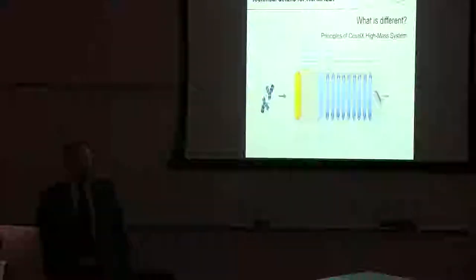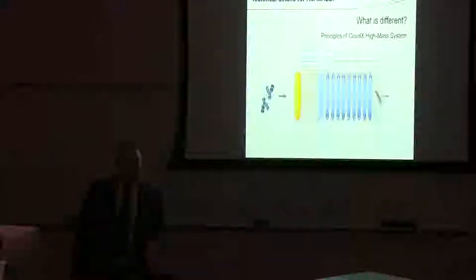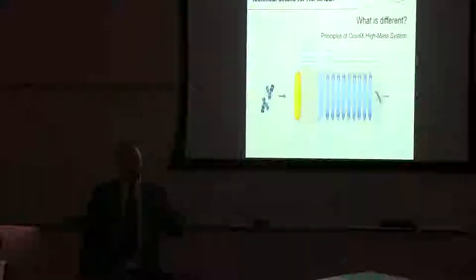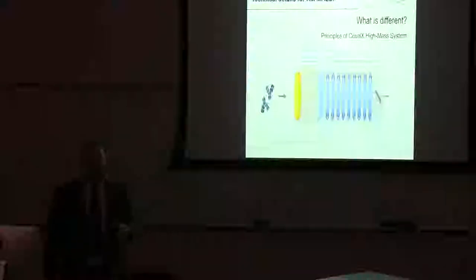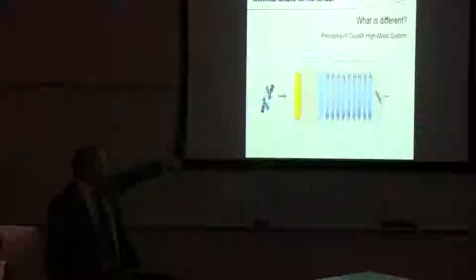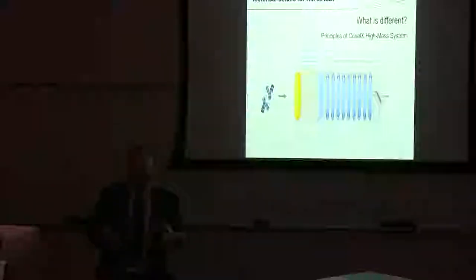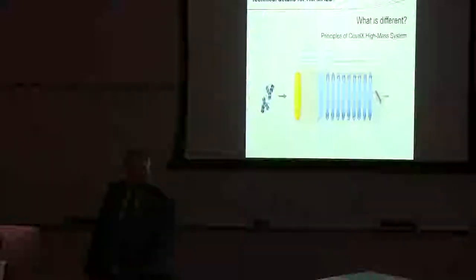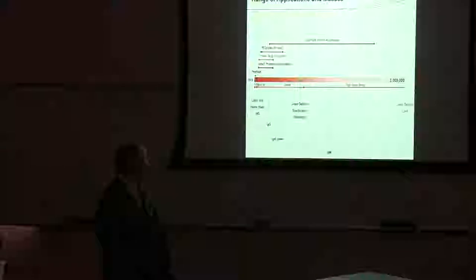So, the way that the Covelex detector works is it's basically a conversion dynode. And so, as the antibodies or the high molecular weight species hit the detector, the conversion dynode is going to then kick off secondary ions. But these are going to accelerate through the dynode to a secondary detector, where with a kind of a cascade effect, you're going to kind of be amplifying the signal to increase the sensitivity.